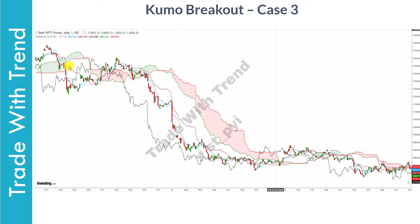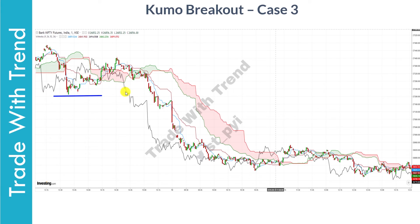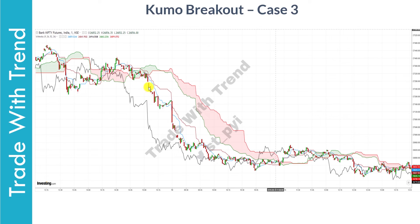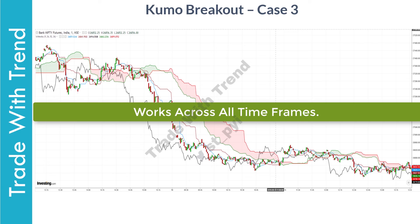In the third case study on a one-minute timeframe, no trade was available in the congestion region based on the main and confirmation rules. Once price moved below the range, the short trade was clearly there to be taken because all elements had aligned perfectly — Tenkan and Kijun were clearly trending lower, Senku A and Senku B confirmed a downtrend, and Chikko was clearly below price. The beauty of Ichimoku Cloud is that it works across all timeframes and is suitable for scalping, day trading, swing trading, and positional trading.